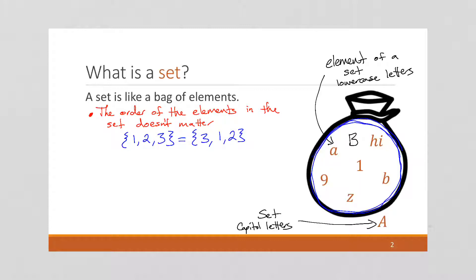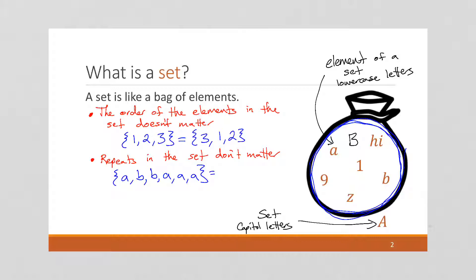Because a set has this idea of an unordered bag — the elements are all just thrown together — we want to know what elements are in the bag. The second property is that repeats in the set don't matter. So the set containing A, B, B, A, A, A is really just the same as the set containing A and B. The order doesn't matter and repetitions don't matter — it's just a matter of what individual elements are grouped together.